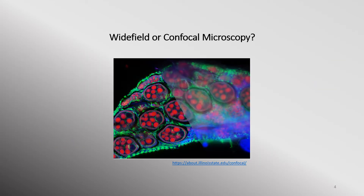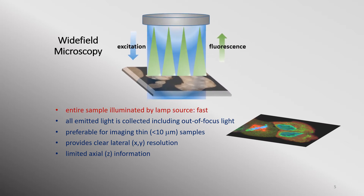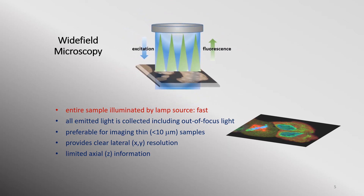In fluorescence microscopy, one of the most common questions scientists face is whether wide-field or confocal microscopy can answer their research problems. Either one could be a better choice — it all depends on sample, application, the required data, as well as data quality. In a wide-field microscope, the entire focal volume is illuminated, but this creates blur from areas out of focus above and below the image plane. When samples are thin and flat, wide-field microscopes are preferred as they provide good resolution in the XY plane. An example would be a single layer of cultured cells or a very thin tissue sample.